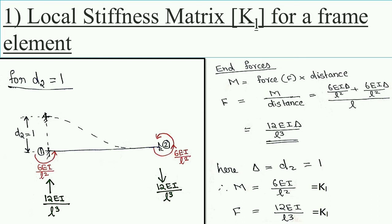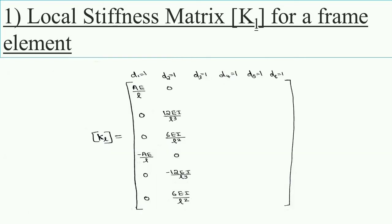So for D2 = 1, the stiffness matrix column is: 0, 12EI/L³, 6EI/L², 0, −12EI/L³, 6EI/L².